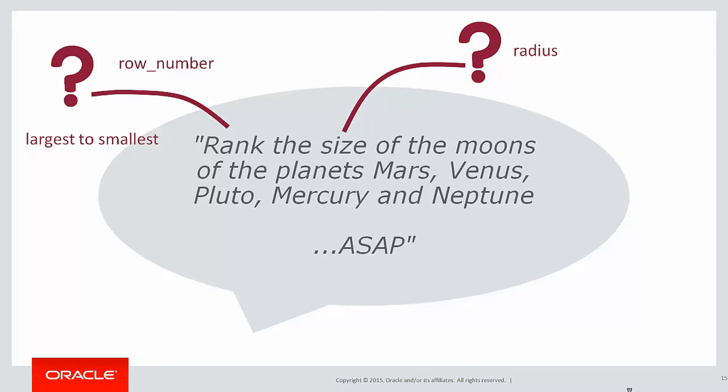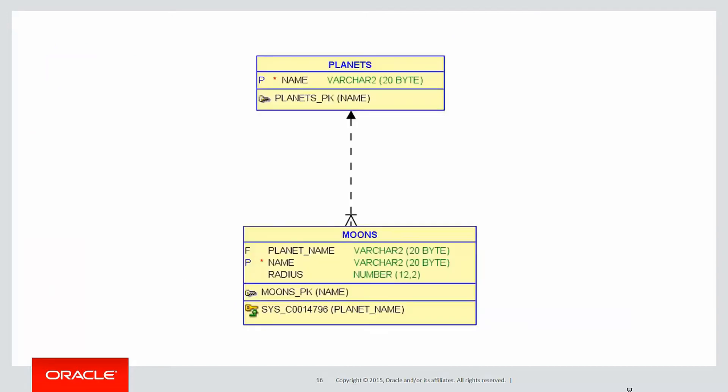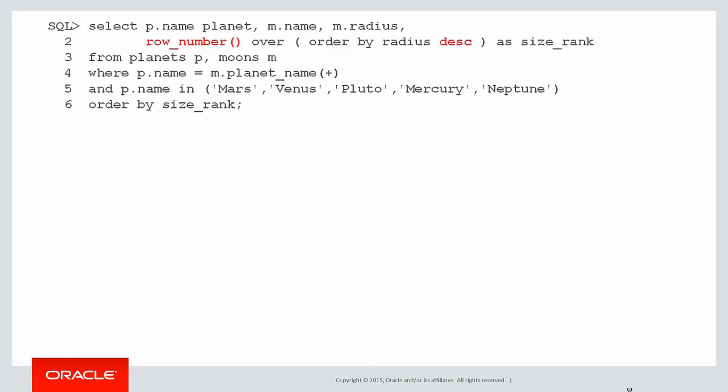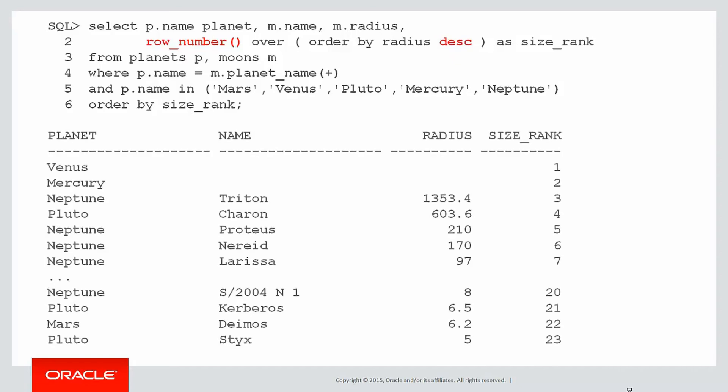Here's our data model: we have planets — all the planets of the solar system — and each of those planets may have zero or more moons. Here's our analytic function: as we've seen in the past, to order them we're using ORDER BY radius descending to get largest to smallest.